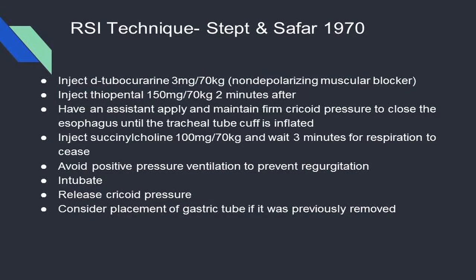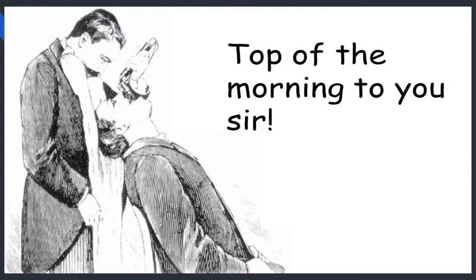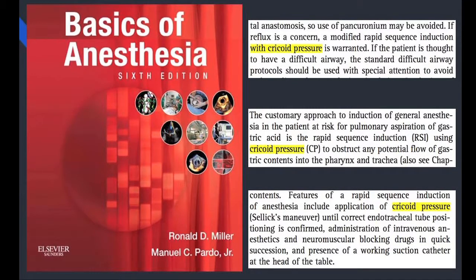Then induce — they recommend thiopental, a barbiturate — and have an assistant apply cricoid pressure firmly. The idea is that you'll close the esophagus, then intubate, put the cuff up, and release cricoid pressure. Even if they regurgitate at that point, the cuff will protect them from aspiration. This is still taught today — this anesthesia textbook published in 2011 has three different mentions of using cricoid pressure, with a caveat that it is contentious.